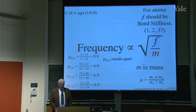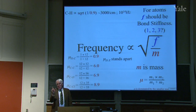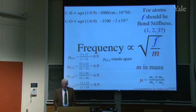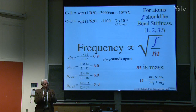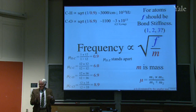A C–H bond has a frequency proportional to √(single bond force constant / 0.9), which works out to about 3000 cm⁻¹ or 10¹⁴ Hz. A C–O single bond, with reduced mass 6.9, gives about 1100 cm⁻¹ or 3×10¹³ Hz. Note that 10¹³ Hz is the pre-exponential factor in the Eyring equation — it's how fast carbon and oxygen atoms vibrate.